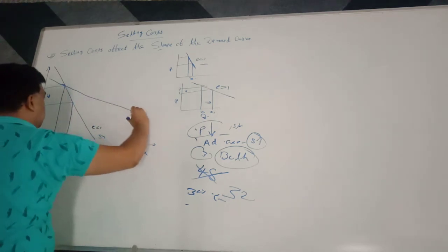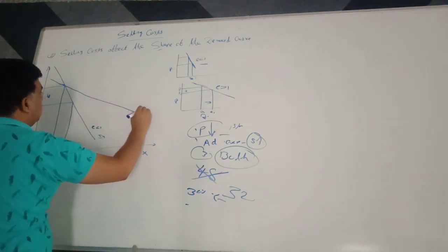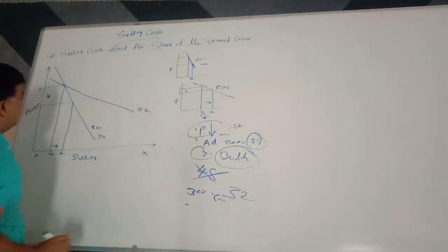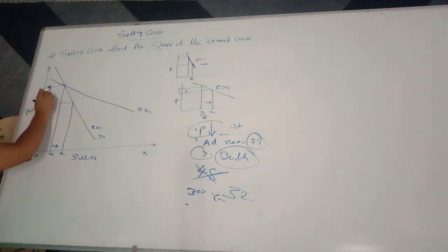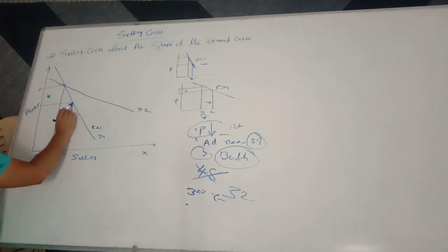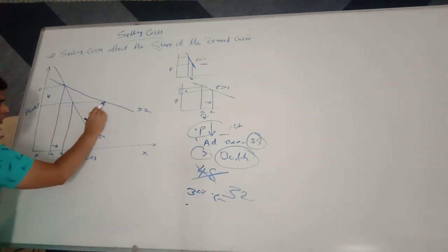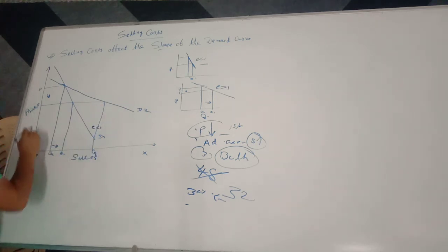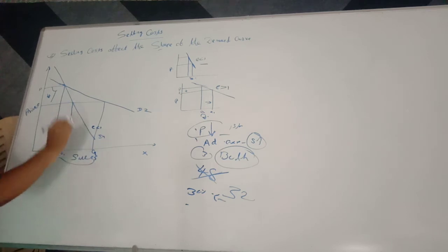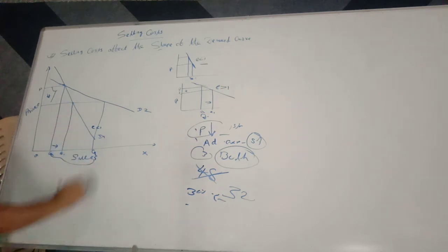This new curve is demand curve D2. When price is reduced from P2 to P1, demand for the product increases from Q2 to Q3. This shows the significant change in the shape of demand.